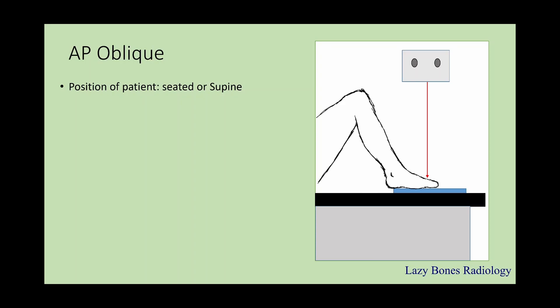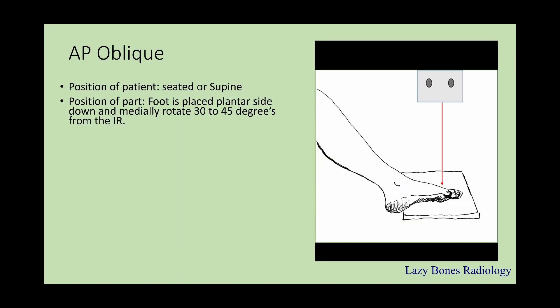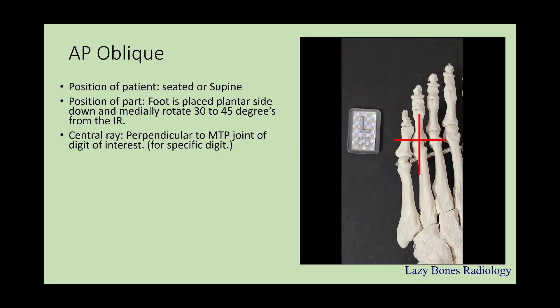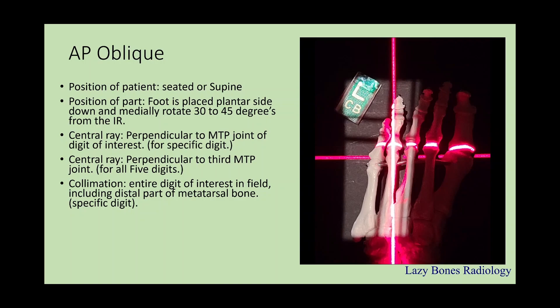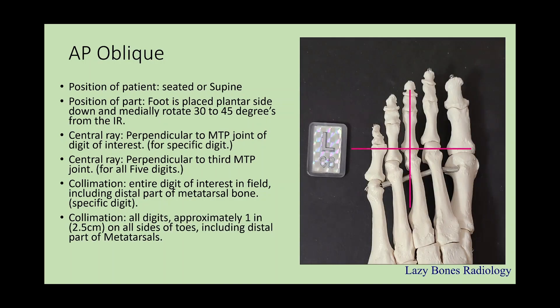Next is your AP oblique projection. Position of the patient is seated or supine. Position of the part: foot is placed plantar side down, immediately rotated 30 to 45 degrees from the IR. Centering is perpendicular to the MTP joint of the specific digit, or perpendicular to the third MTP joint if you want to image all five digits. Collimate the entire digit of interest in the field, including the distal part of the metatarsal bone for the specific digit, or if you're imaging all the digits, make sure your collimation box is approximately one inch around all the sides of the toes, including the distal part of the metatarsals. SID is 40 inches, and remember to label correctly.